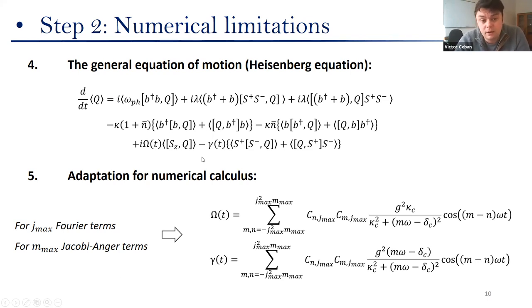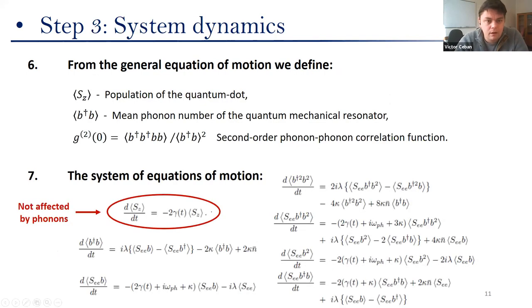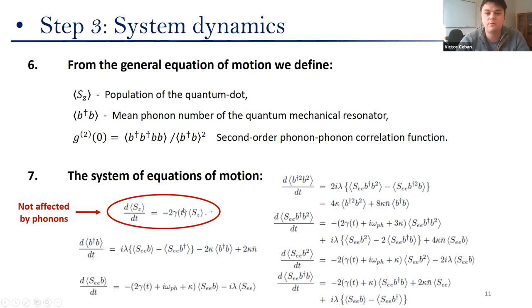Some coefficients that appear when we eliminate the photonic operators must be adapted for numerical calculus. Here we are limited to only a few Fourier terms in the Fourier decomposition, so we cannot treat signals with large differences in frequencies. Once we have the general form of the Heisenberg equation, we can estimate various parameters of interest. Particularly in this study, I'll present the investigation of the population of the quantum dot, where from its equation of motion we can already see that it is not affected by the presence of phonons in the system.